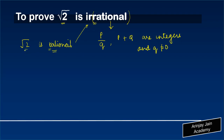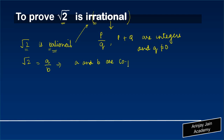So if root 2 is rational, then what that implies is that root 2 can be written as A upon B, in such a manner that A and B are co-prime. Co-prime means that the highest common factor of two numbers, in our case A and B, is 1. So if root 2 is rational, then root 2 can be written as A upon B, where A and B are co-prime.